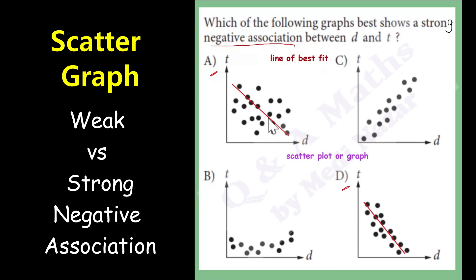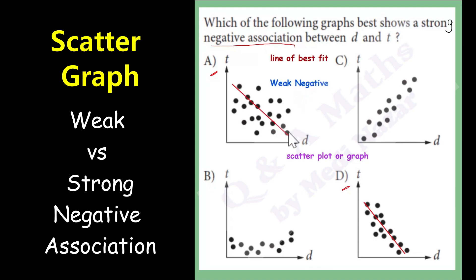If we compare letter A and letter D — in letter A, some data points are far from the line of best fit, and it shows a weak negative association between D and T.